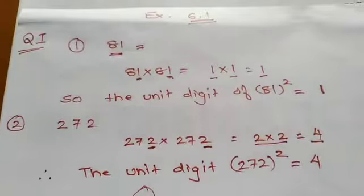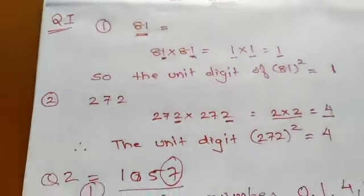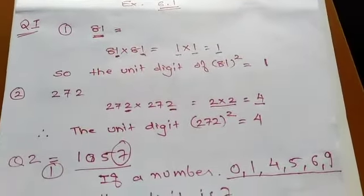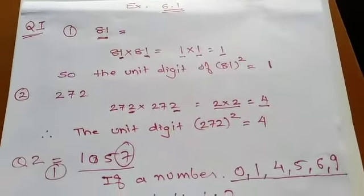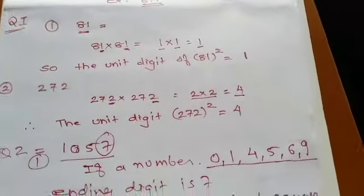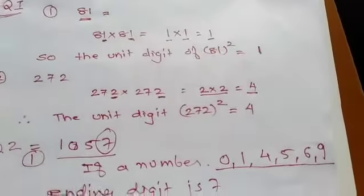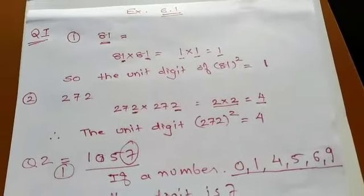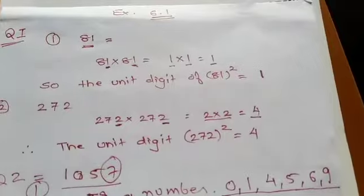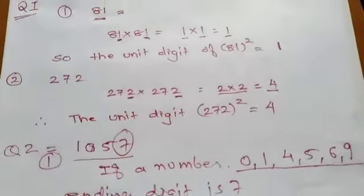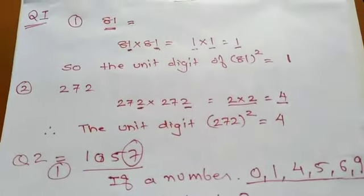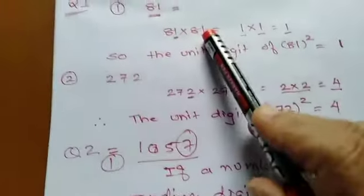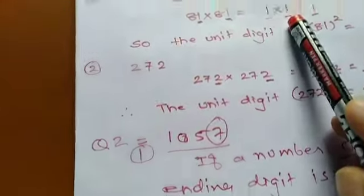Here in exercise 6.1 there is question number 1 which asks what would be the unit digit of a number after squaring. Question 1 is 81. So how can we assume what would be the unit digit of 81 if it is squared? So instead of squaring the whole number that is 81, 81 into 81, instead of doing that we will take only the last digit that is here it is given as 1. So 1 into 1, I have done 1 into 1, you get 1.